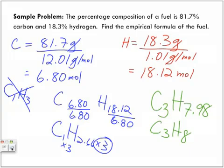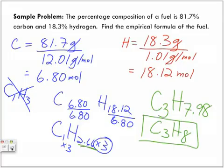If we don't apply the multiplication step and just round off, technically the lowest element will always divide to 1. But that's not always the case — look at all the different types of formulas we've seen in that table; they're not always going to have a 1. So the empirical formula for the fuel composition is C3H8.